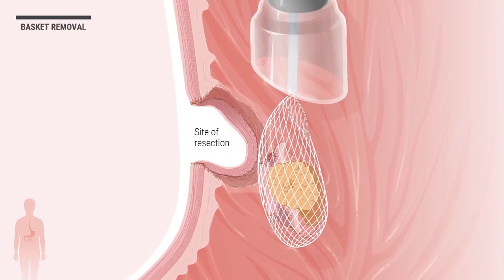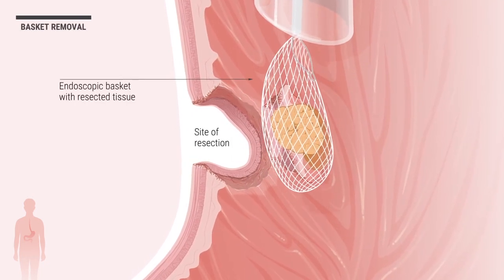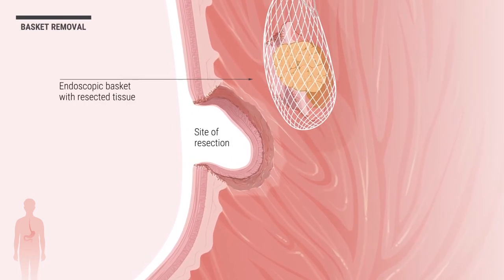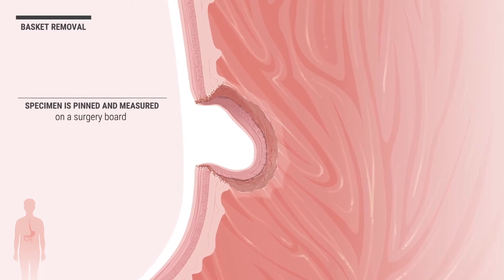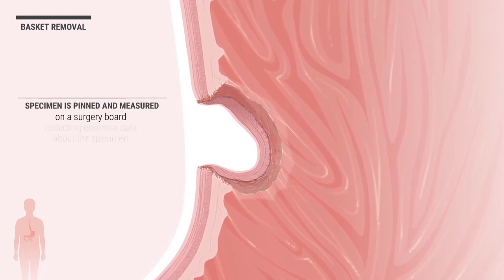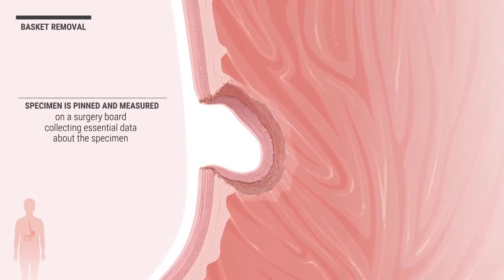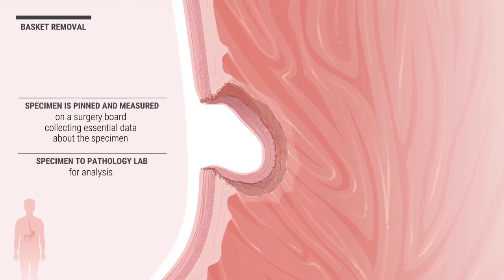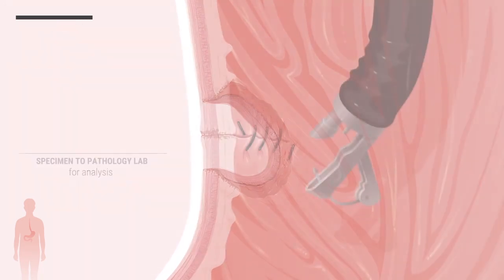Now, the resected tissue is removed with an endoscopic basket, after which the specimen is pinned and measured on a surgery board, collecting essential data about the specimen. The specimen is then sent to the pathology lab for analysis.